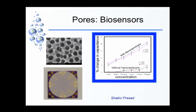Without this porous membrane, just on a flat film, it was very difficult — even at 100 micrograms per ml concentration of protein — to detect that change in capacitance. But when you added these nanopores, you could increase the detection to a great extent, and we could go down to about 100 parts per billion. That is nearly five orders of magnitude increase in performance in terms of detection limits.